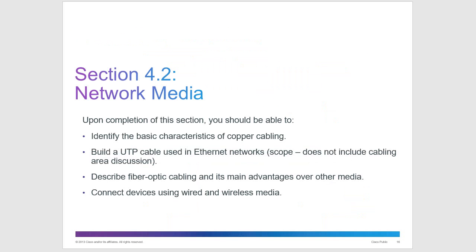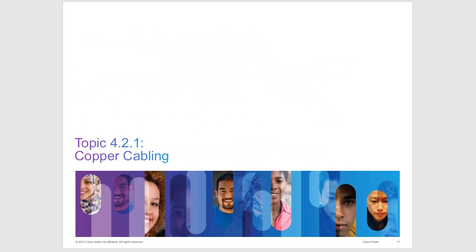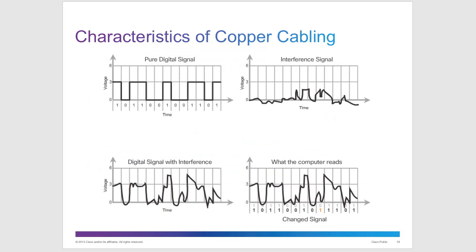Network media covers the different types of cabling used on the network. First is copper cabling. Something we need to be concerned about with copper cabling is interference on your signal. If your cabling is too close to power lines, lights, or fluorescent lighting, there can be interference that occurs.